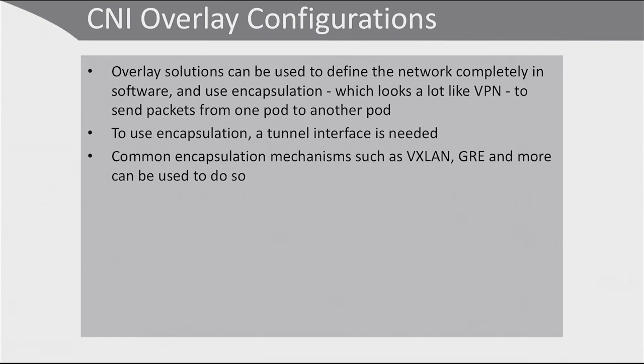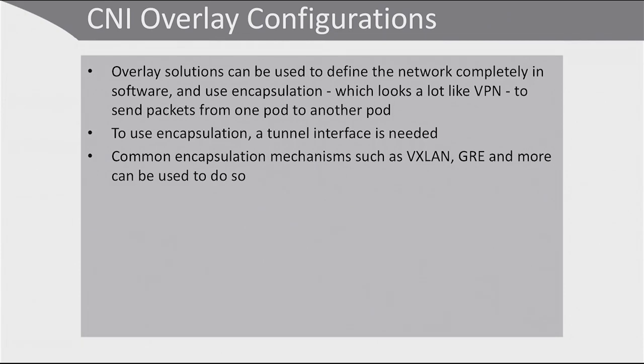The third type of networking is the overlay configuration. Overlay solutions depend on plugins and can be used to define the network completely in software using encapsulation — it looks a lot like VPN. It allows you to send packets from one pod to another pod using tunnel interfaces. In VPN, the client is remote and the internet sits between client and server, but VPN makes it appear as if the client is on the local network. That's exactly the same idea in the CNI overlay configuration — you need a common encapsulation mechanism.